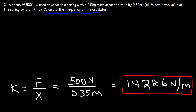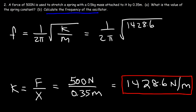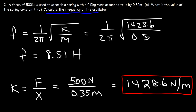Now let's calculate the frequency of the oscillator. The frequency is 1 over 2 pi times the square root of k over m. So it's 1 over 2 pi times the square root of 1428.6 divided by the mass of 0.5. The frequency comes out to 8.51 hertz. That's the answer to part B of that problem.